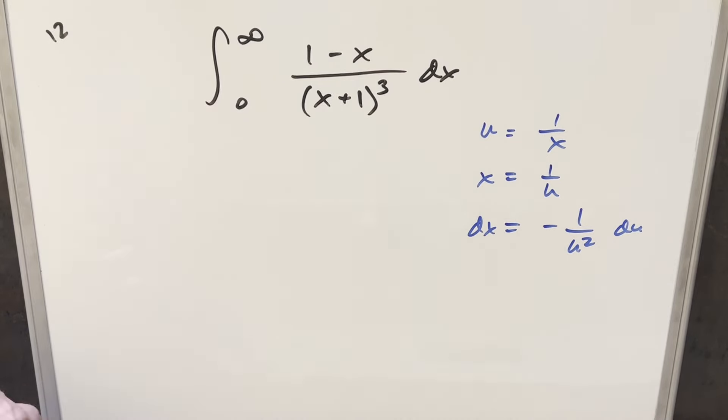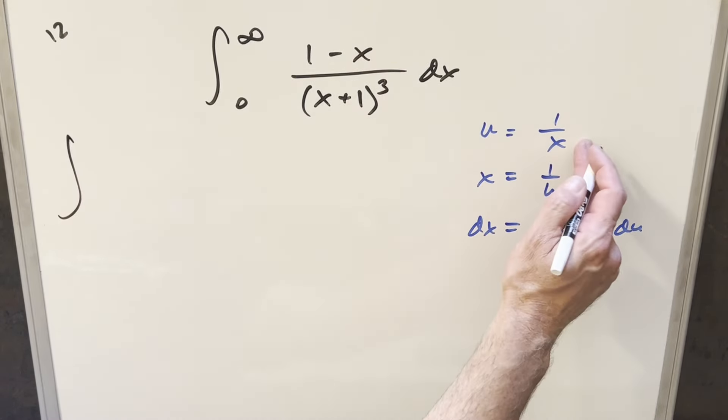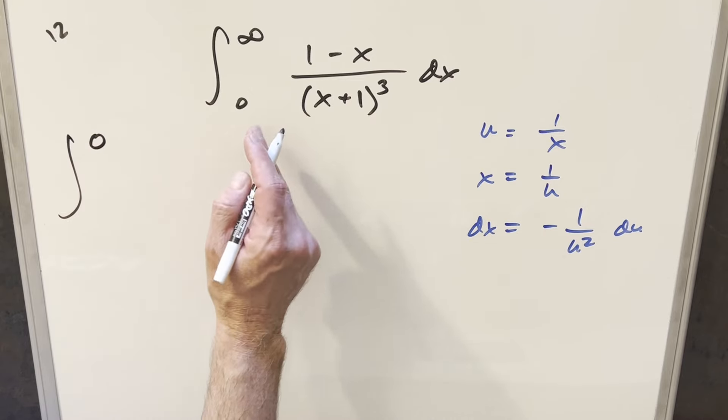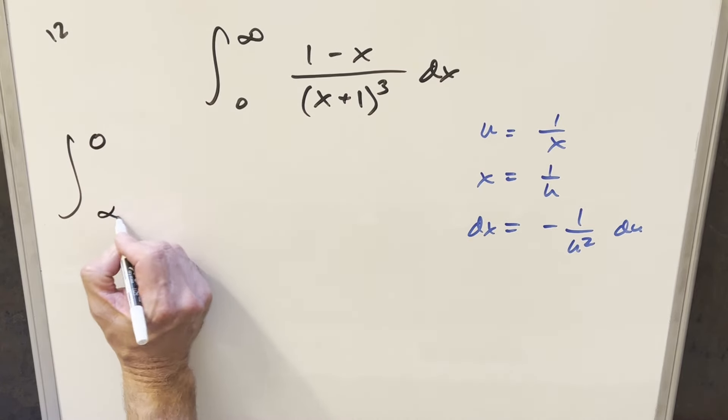So then go ahead and substitute on this. First, plugging infinity in here, we're going to have a 0. Then when you plug a 0 in here, this is going to be going off to infinity.